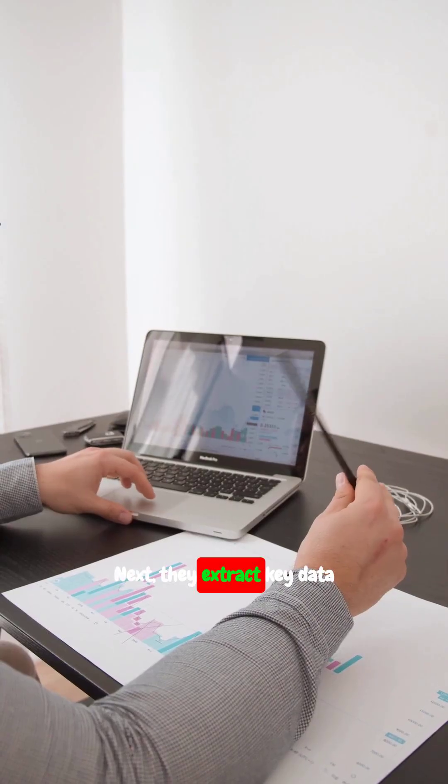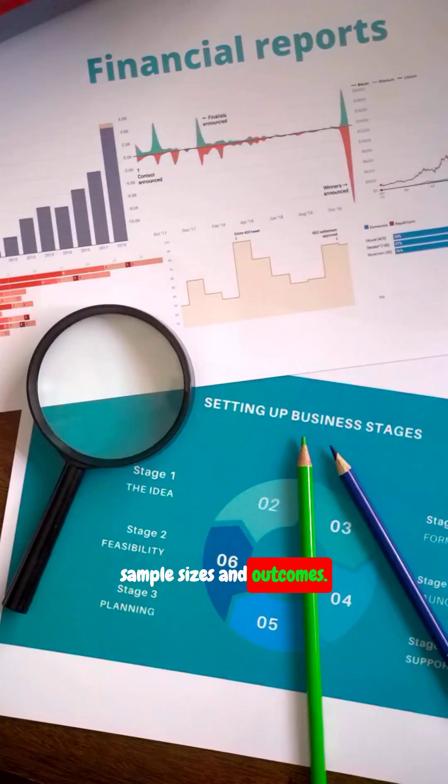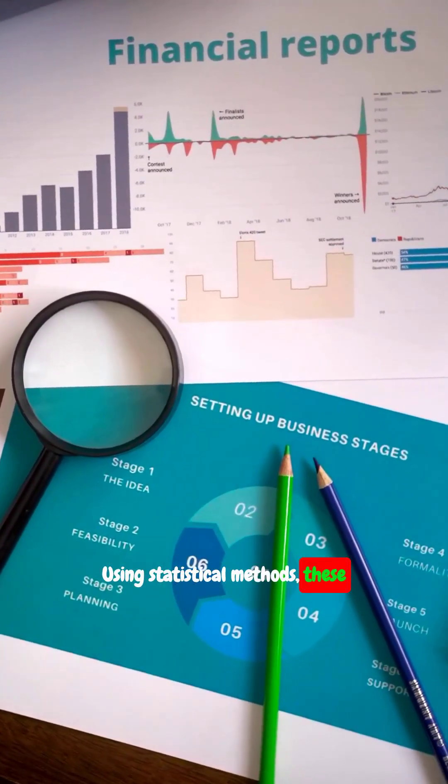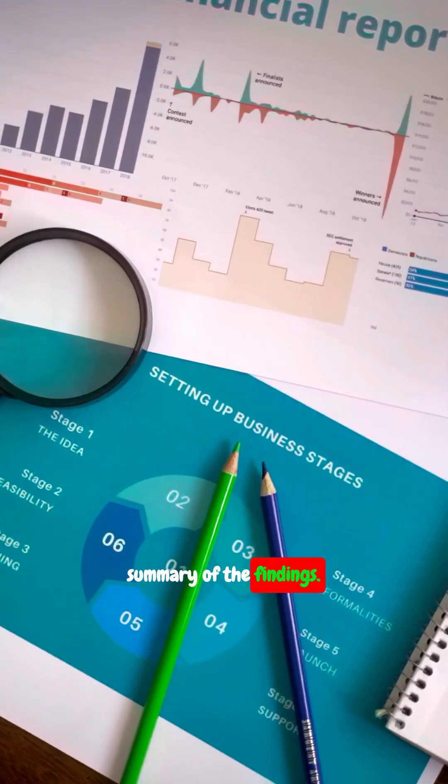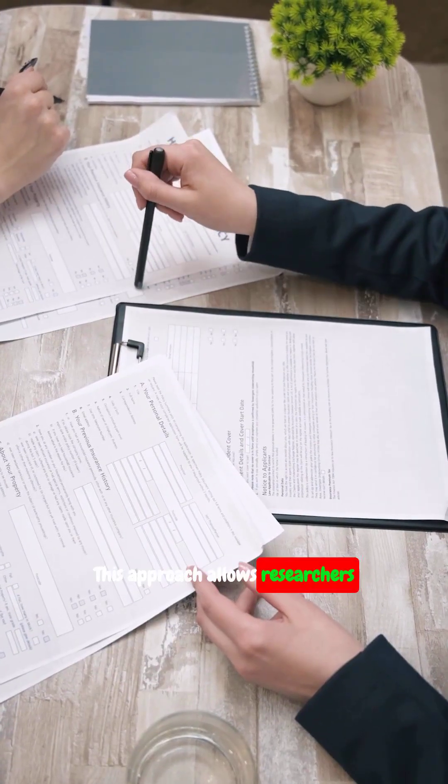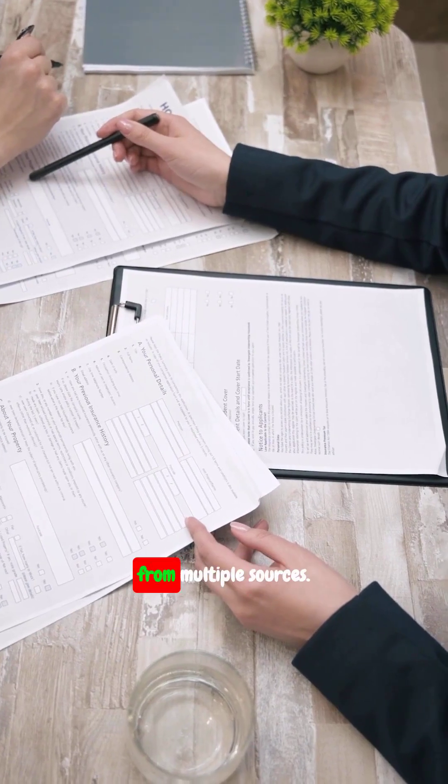Next, they extract the key data from each study such as sample sizes and outcomes. Using statistical methods, these data are then combined to produce a comprehensive summary of the findings. This approach allows researchers to draw more robust conclusions by synthesizing evidence from multiple sources.